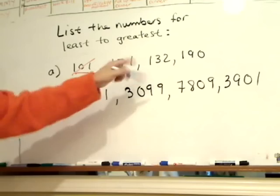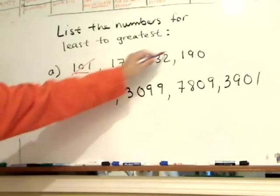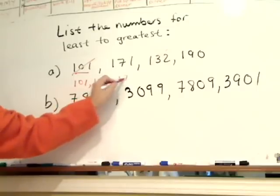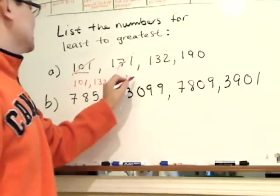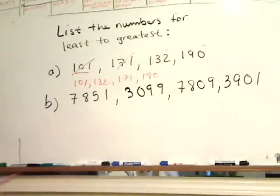Of course, this is the smallest, 101, then cross that out. Next one is 132, cross that out. Next one is 171, cross that out, and the biggest number, of course, is 190. Straightforward.